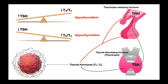Thyrotropin-releasing hormone stimulates the anterior pituitary to make and release thyroid stimulating hormone, or TSH, which is also called thyrotropin. TSH is released from the anterior pituitary and travels to the thyroid gland, where it stimulates the thyroid to make thyroid hormones. Those are then released into the blood, and the two major thyroid hormones are T3 and T4 — the exact reason they're named this will be discussed later in the video.